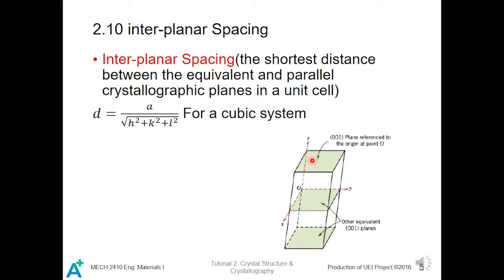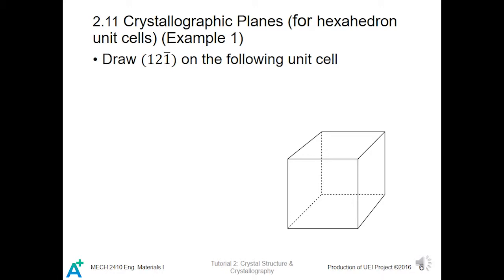You can see here the CCC1 plane is referenced to the origin at point O, and there are other equivalent CCC1 planes. For one unit cell the CCC1 plane is here, and because inside a crystal all unit cells are the same, for each unit cell the CCC1 plane repeats, giving a parallel distribution of the plane from top to bottom.